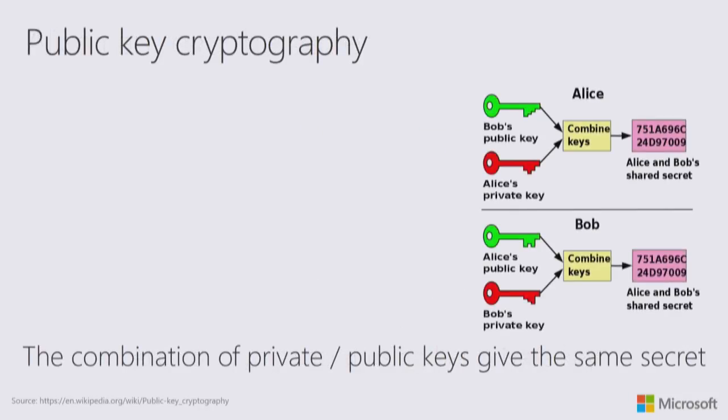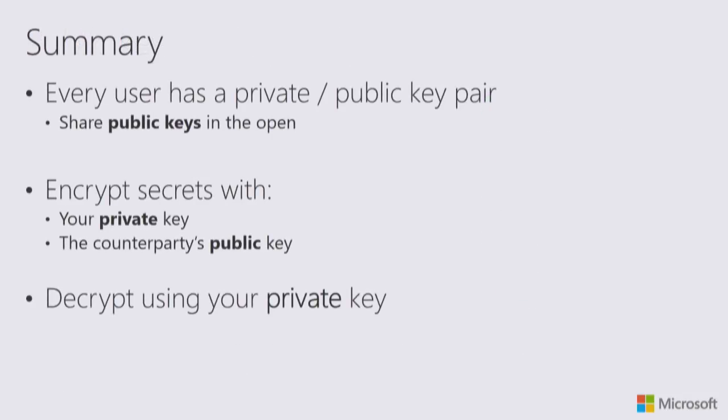In summary: if two parties or multiple parties have matching public and private key pairs, and one party encrypts a secret with all the public keys of those they want to share with, then anybody with a matching private key can decrypt that secret. Share your public keys in the open. Keep your private key private, and encrypt and decrypt your secrets using your own private key.